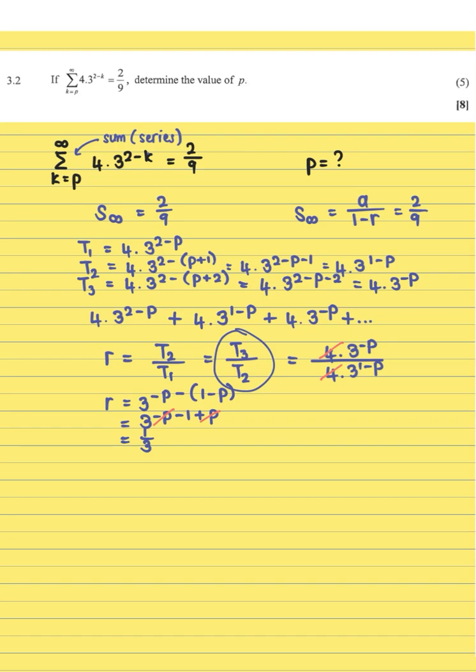Now we're going to take the formula: a over 1 minus r equals 2 over 9. Our a value is always your first term, so the first term in this case was 4·3^(2-p). That's over 1 minus the ratio, which is one third, and that equals 2 over 9.